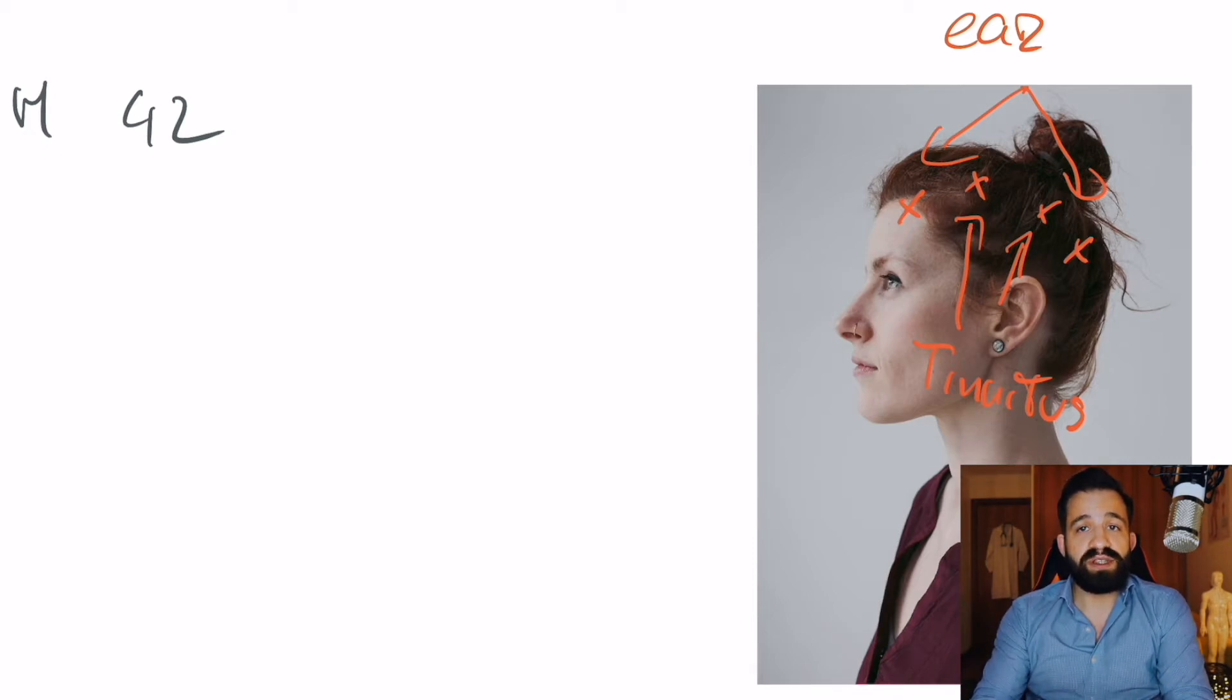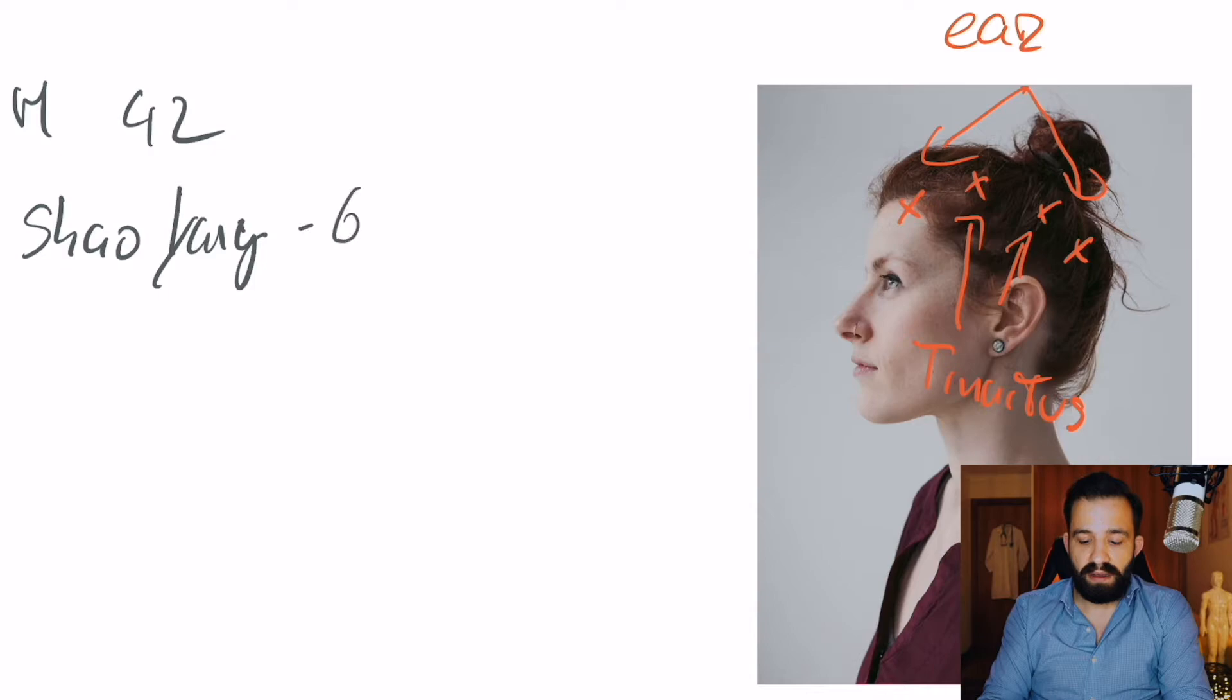And in this case, the patient described the sound as coming from the side, which for the balance method users know this is a Shaoyang indicator, mainly gallbladder. So, the two main approaches to continue this treatment would be either a global balance using Shaoyang-Jueyin or Shaoyang-Xiaoyin. And for this I asked a second question, which was does the volume of the sound go up when you're tired and the patient said yes, this is a clear Shaoyang indication, mainly kidney.